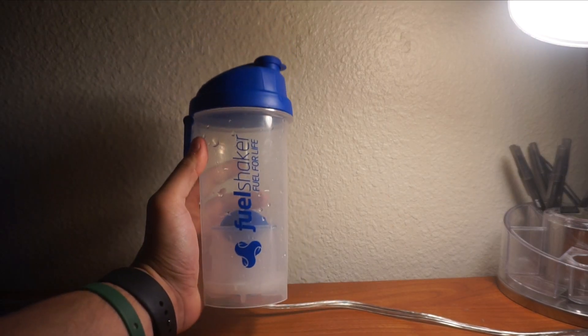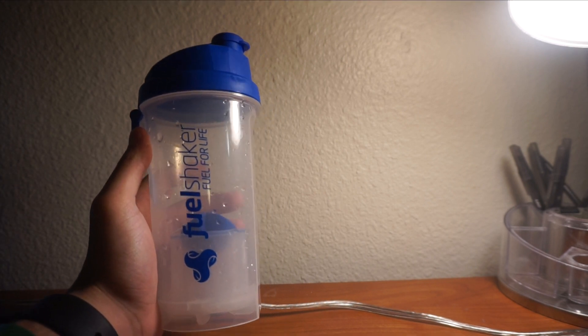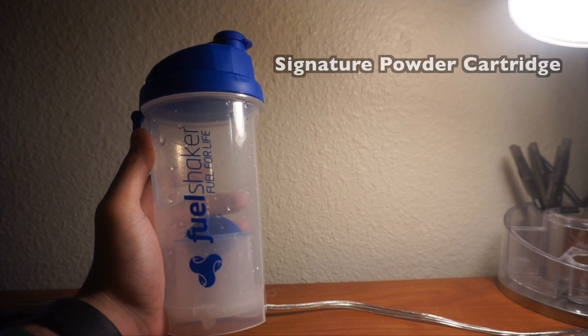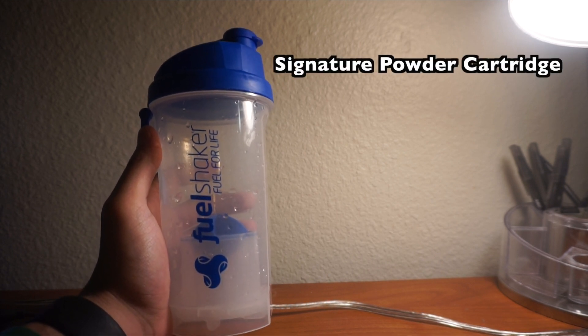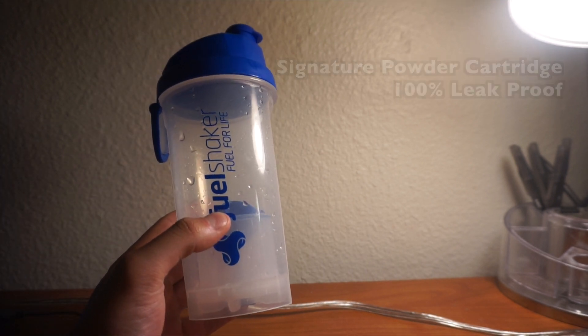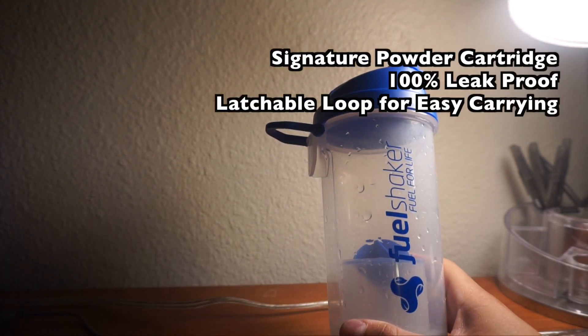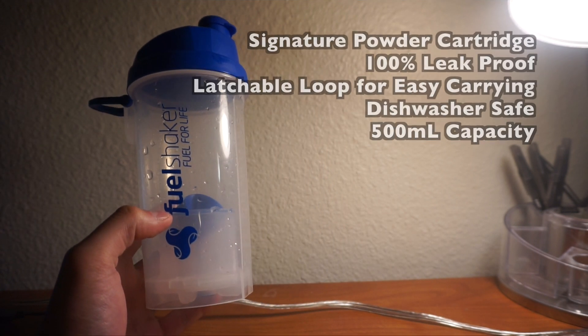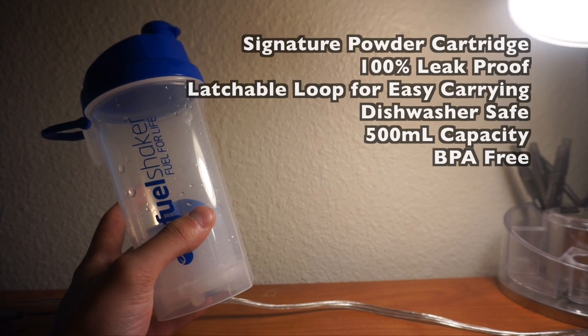The first one we have is Fuel Shaker. This is one of the newer ones. The specs that we have on this guy is that it has their signature powder cartridge, which is at the bottom, as you guys can see. Technically, what they say, if you close it, is 100% leak proof. It's got a latchable loop right here to attach it to anything. Dishwasher safe. Holds about 500 milliliters, which is half a liter, and it's BPA free.